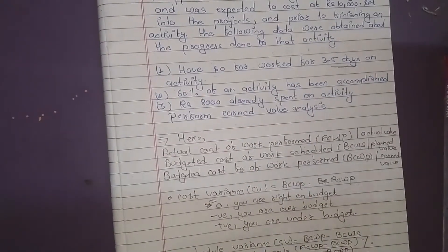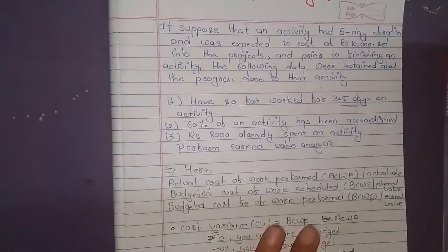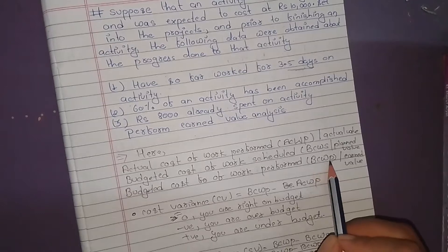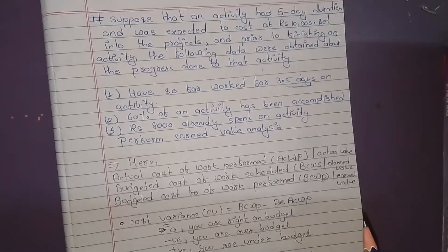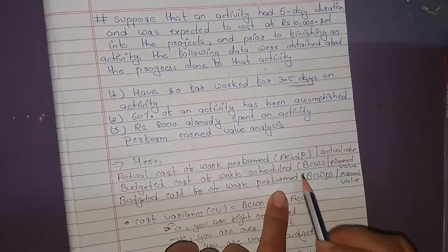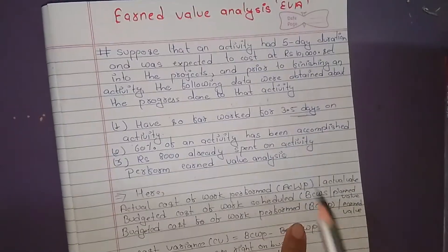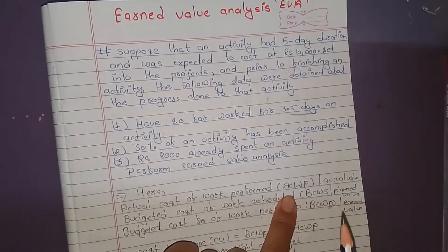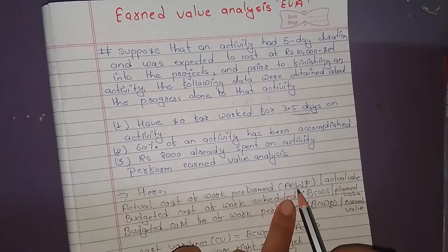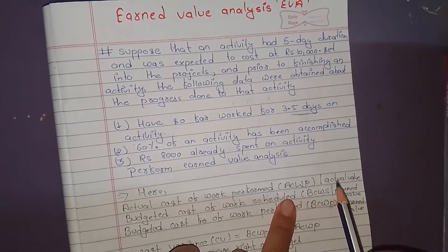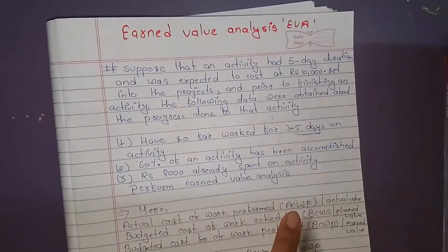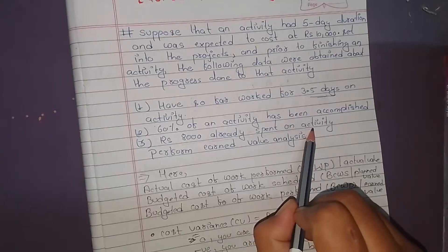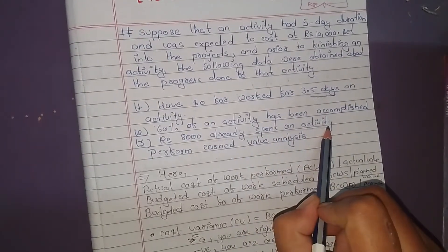The first question is to find ACWP, BCWS, and BCWP. ACWP is the actual cost of work performed. From the problem, RS 8,000 has already been spent on the activity. Therefore, ACWP equals RS 8,000.